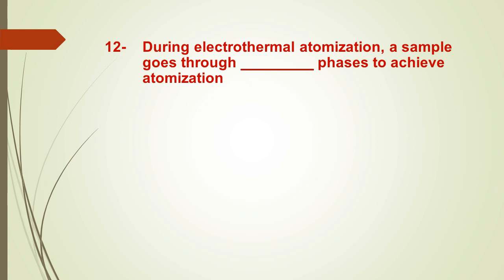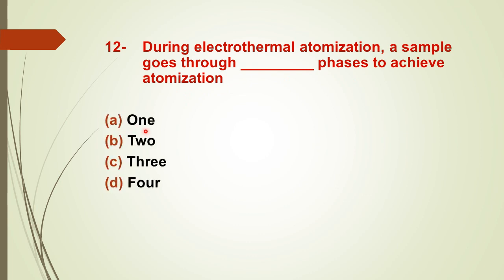Question number twelve: during electrothermal atomization, a sample goes through how many phases to achieve atomization? Options: A) 1, B) 2, C) 3, D) 4. The right answer is C — three phases. There are three different events before we finally achieve atomization.